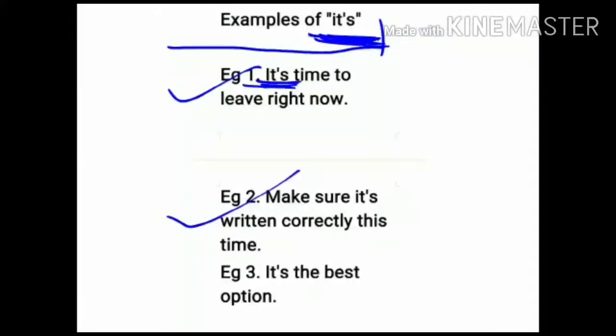Example number 2: Make sure it's written correctly this time. Now see this it. Make sure it is written correctly this time. So it means it is. Instead of writing it is, we have written it's using an apostrophe.